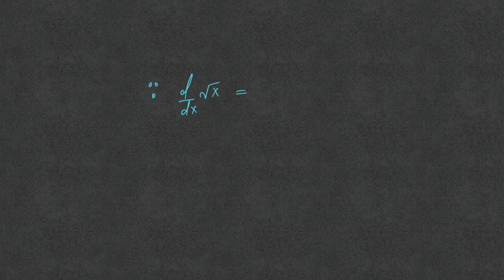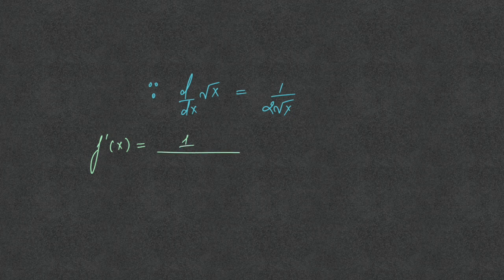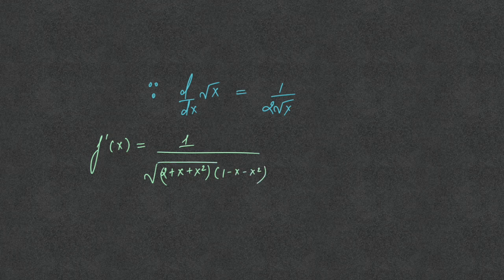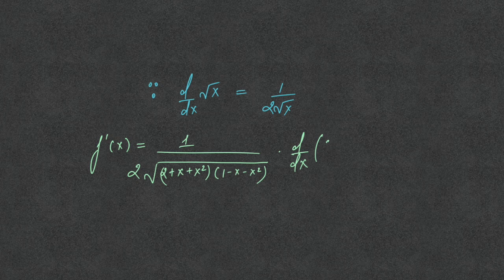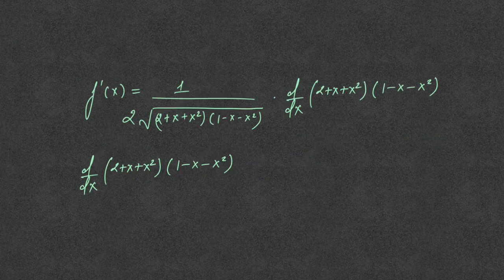Because the derivative of the square root of x is 1 upon 2 root x, applying chain rule, f dash x becomes 1 upon the square root of (2 plus x plus x squared) into (1 minus x minus x squared), multiplied by 2. Now we need the derivative of (2 plus x plus x squared) into (1 minus x minus x squared).